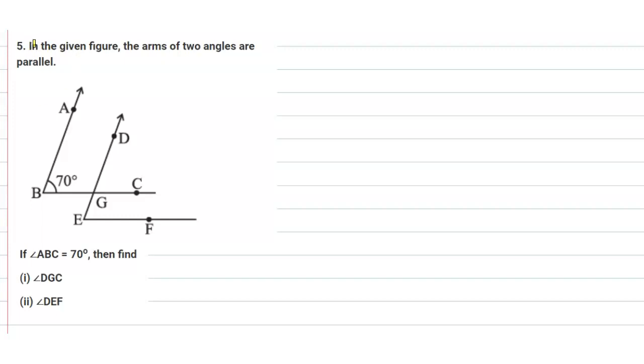Hello students, the given question is: in the given figure, the arms of two angles are parallel. If angle ABC is 70 degrees, then find angle DGC and angle DEF. We need to find angle DGC, so let this be your angle number one.